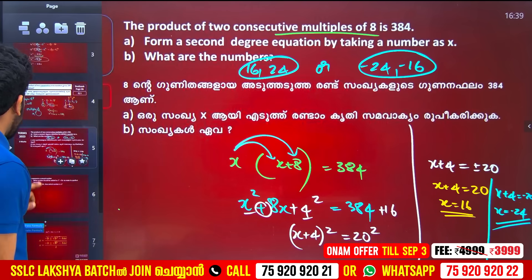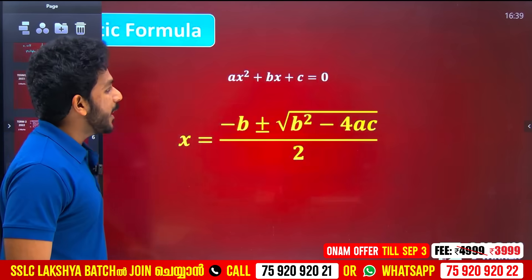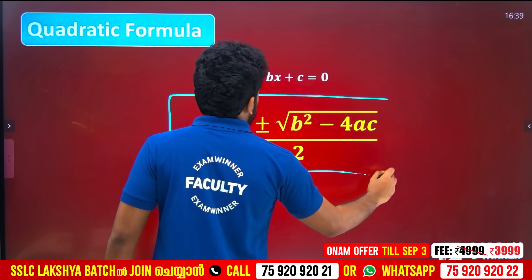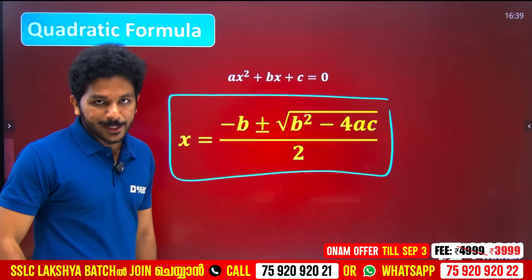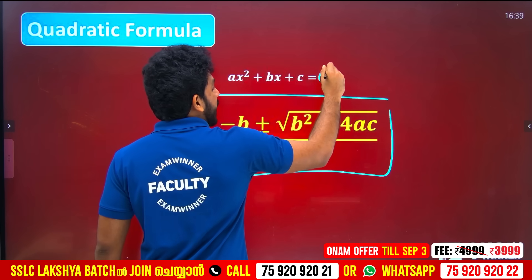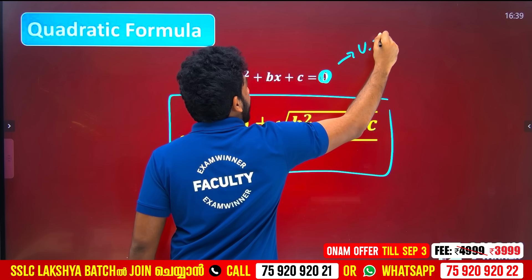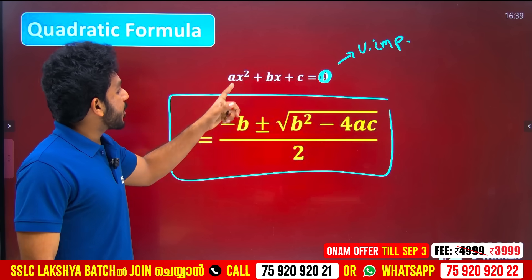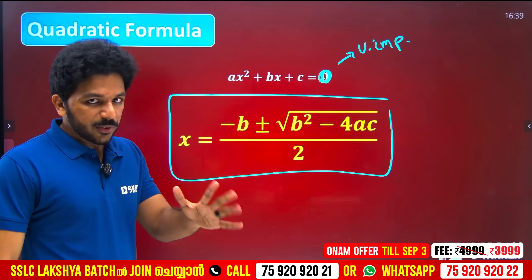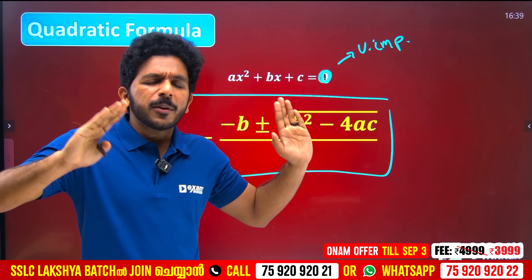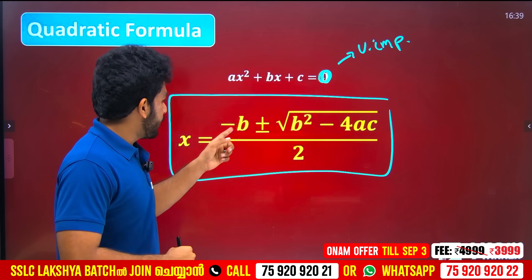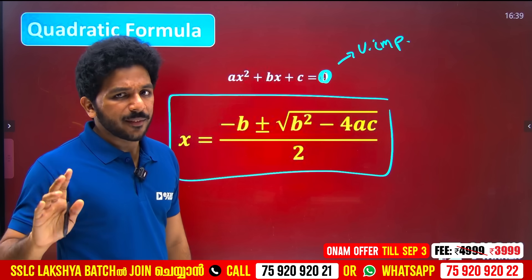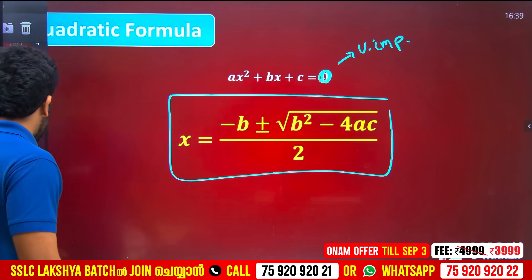Let's look at the quadratic formula. When you learn the quadratic formula, x squared is very important on the right side. The standard form is ax squared plus bx plus c equals 0. The formula is: x equals minus b plus or minus root of b squared minus 4ac, divided by 2a. This is the root rule.